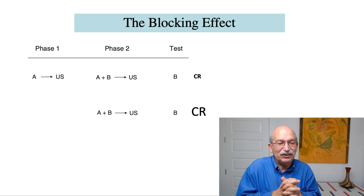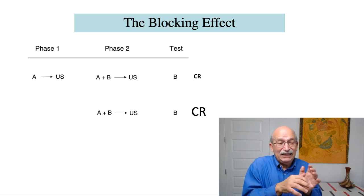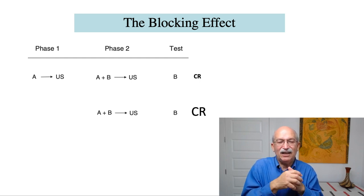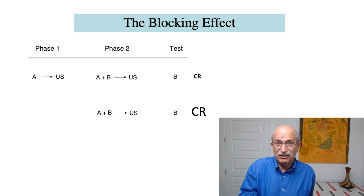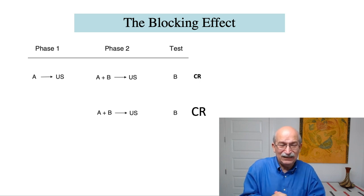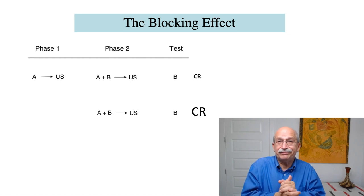But first, let's talk about what the effect is in the first place. So this phenomenon involves an experiment that involves two different phases of training. And there are two different groups of subjects in this experiment. The top line illustrates what happens to one group. And the second line illustrates what happens to the control group. So what happens to the experimental group on the top line? In phase one, they get stimulus A paired with the unconditioned stimulus, let's say a tone paired with food. And that training proceeds long enough so that the tone becomes a perfect predictor of the food and the subject responds at asymptotic levels to the tone. So then we continue training with the tone followed by food. But then we add a second stimulus B, which may be a light. So now the food is preceded by two cues, A and B.